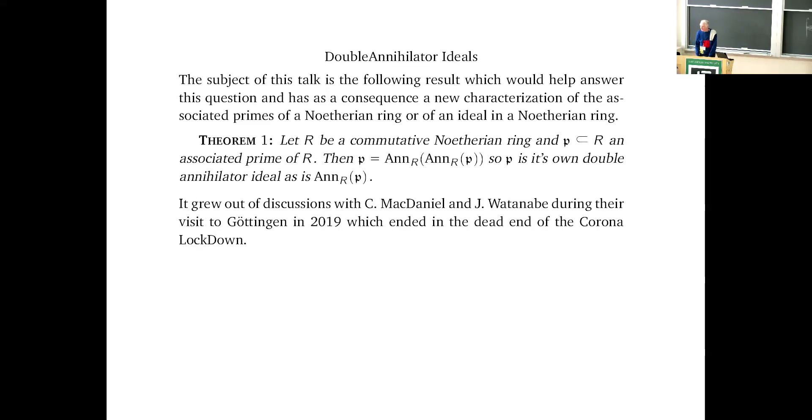The subject of this talk is the following result, which is a partial way to get at these questions. It's a theorem that says, let R be a commutative Noetherian ring, and P an ideal in R which happens to be an associated prime. Then P is its own double annihilator ideal. So this is kind of interesting.